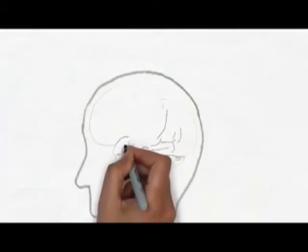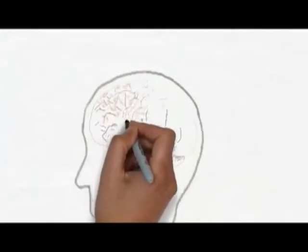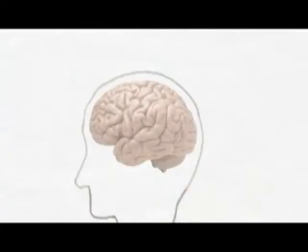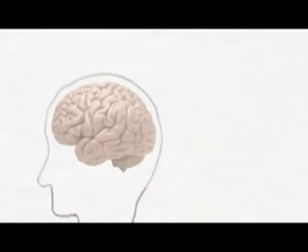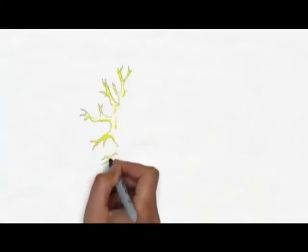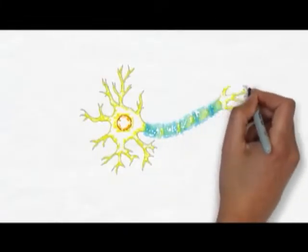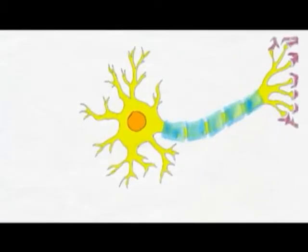This is a brain. Estimates vary, but right now the best guess seems to be that our brains contain around 85 billion neurons. The neuron is a nerve cell, and it's the primary functional unit of the nervous system. This is a generic image of a neuron. Neurons actually come in all shapes and sizes, but this is the prototypical version of a neuron that you'll often see in a textbook.